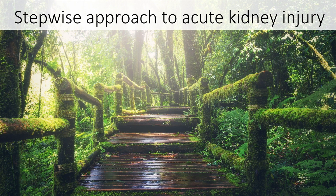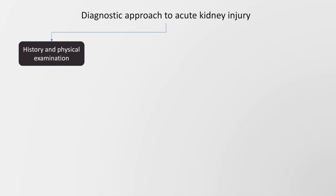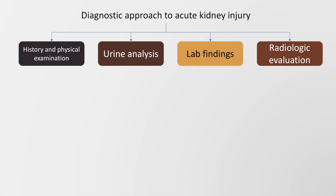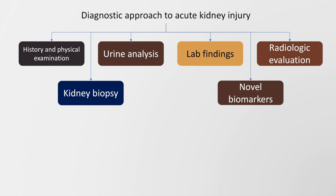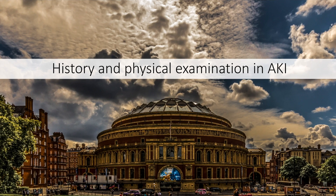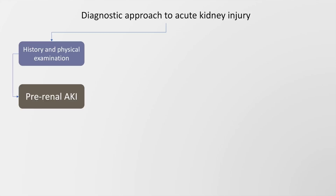Let's move on to a stepwise approach to acute kidney injury. Diagnosis would depend upon history and physical examination, urine analysis, lab findings, radiological evaluation, kidney biopsy, and novel biomarkers.